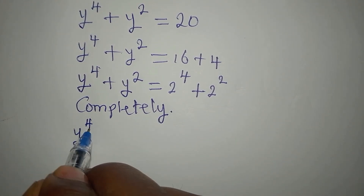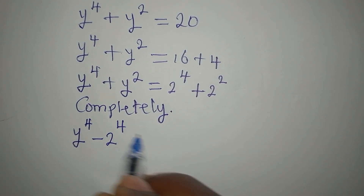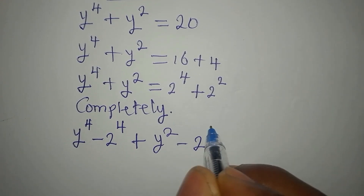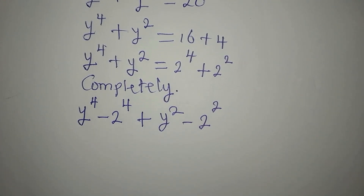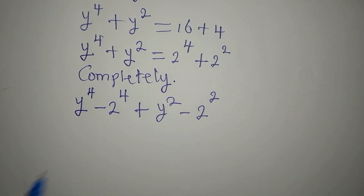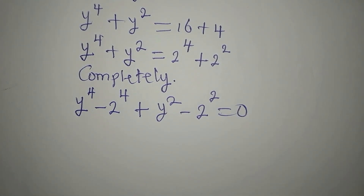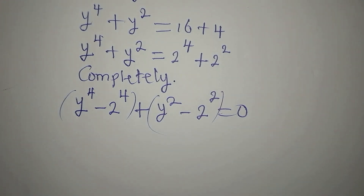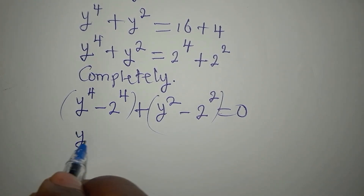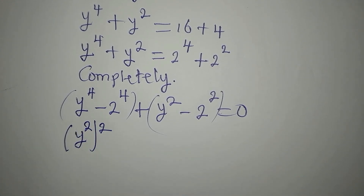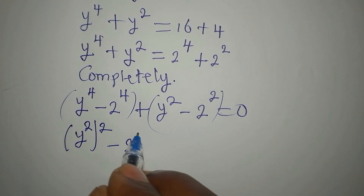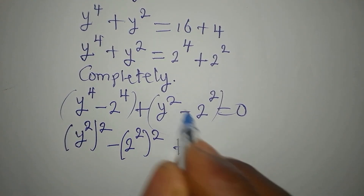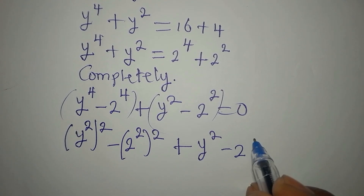We rewrite as y⁴ minus 2⁴ plus y² minus 2² equals 0. We can rewrite y⁴ as (y²)² and 2⁴ as (2²)², which sets us up to apply the difference of two squares to both groups.